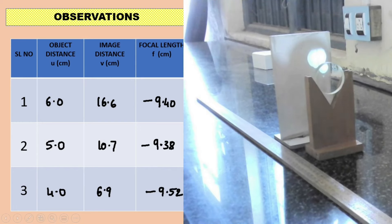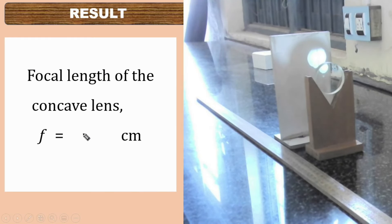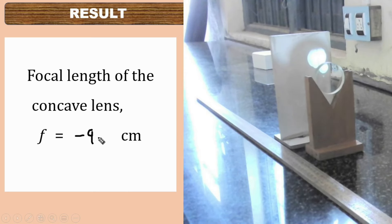From all three trials, we obtain the values and then add them together, then divide by the number of trials which is 3. This gives us the mean focal length of the given concave lens. The mean focal length of the concave lens: f = minus 9.43 centimeters.